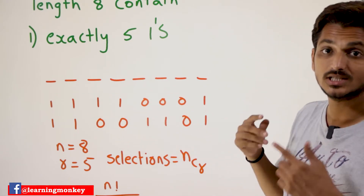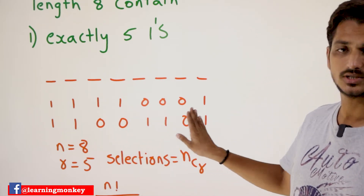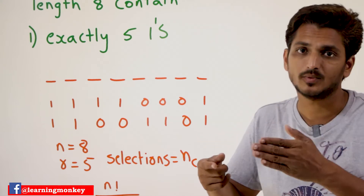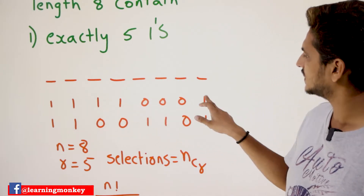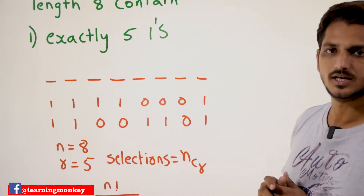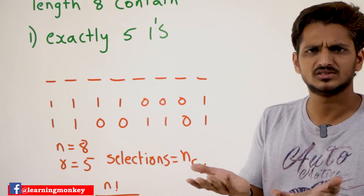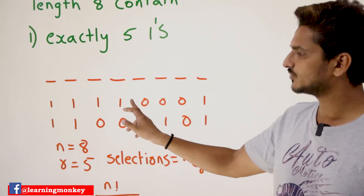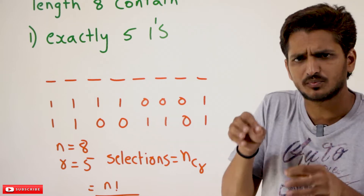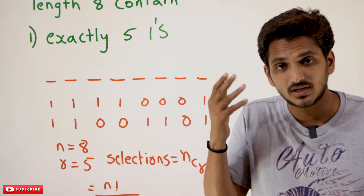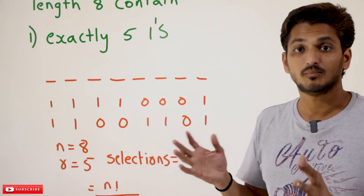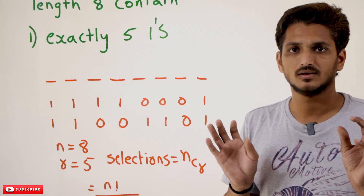For example, suppose we selected the first 4 positions and the last position — that is one type of selection. First 2 positions, two positions in between, and the last position — that is another type of selection. Why does this problem not come under arrangement? Because if you selected those positions and placed ones there, rearranging those ones still gives the same string. So arranging the ones will not change anything.